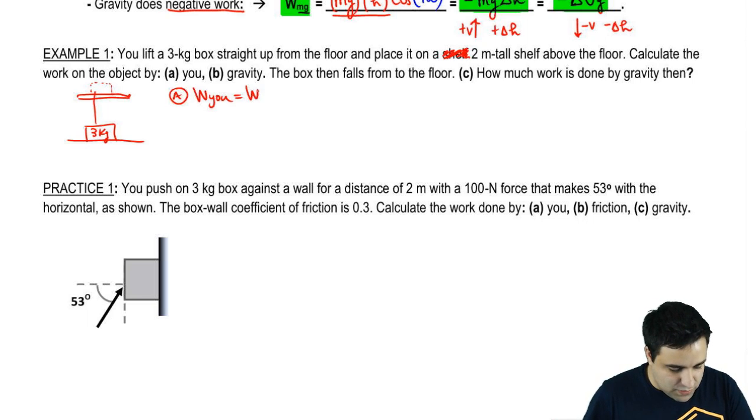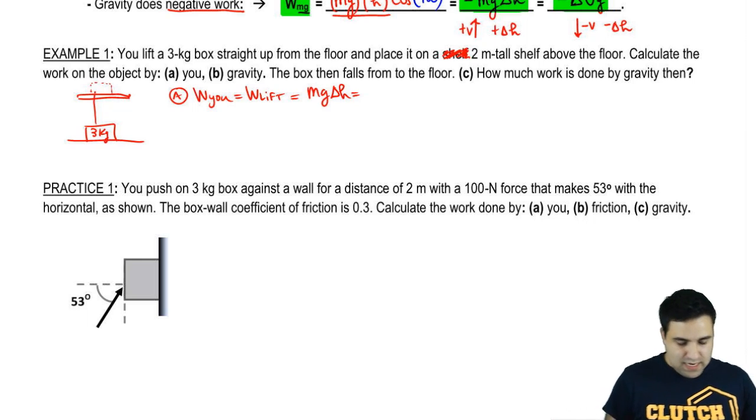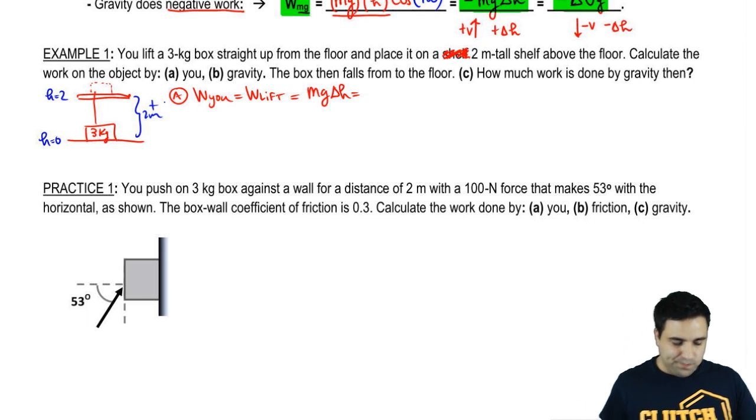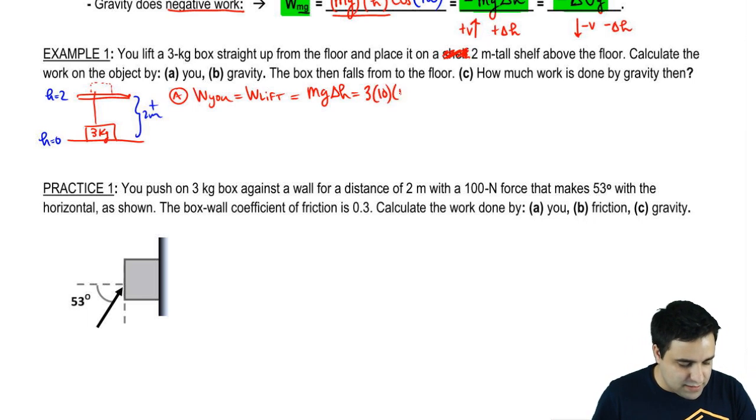The work done by you is the same thing as the work done to lift. And the work done to lift is mg delta H. If this is 2 meters high, I can say that this H is 0, this H is 2, so your delta H is just plus 2. Very straightforward. Mass is 3. Gravity is 10. This is plus 2. So this is 60 joules.